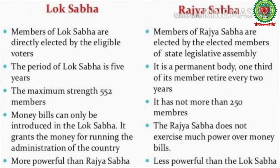Difference between Lok Sabha and Rajya Sabha: The period of the Lok Sabha is five years, while the Rajya Sabha is a permanent body — one-third of its members retire every two years. The maximum strength of the Lok Sabha is 552 members, while the Rajya Sabha has not more than 250 members. A money bill can only be introduced in the Lok Sabha, which grants money for running the administration of the country. The Rajya Sabha does not exercise much power over money bills. Overall, the Lok Sabha is more powerful than the Rajya Sabha.